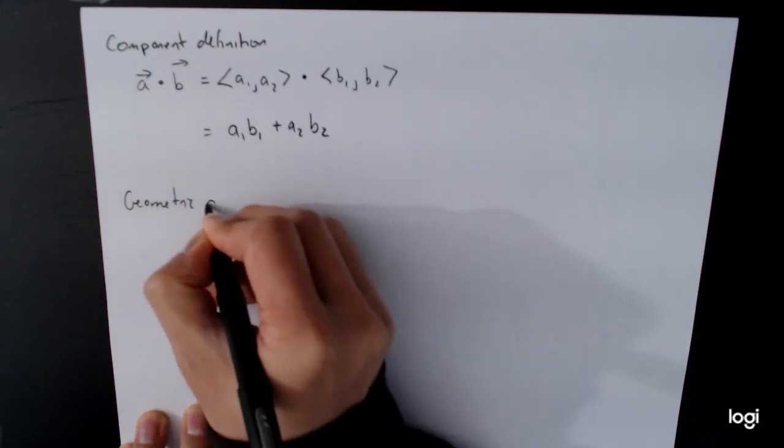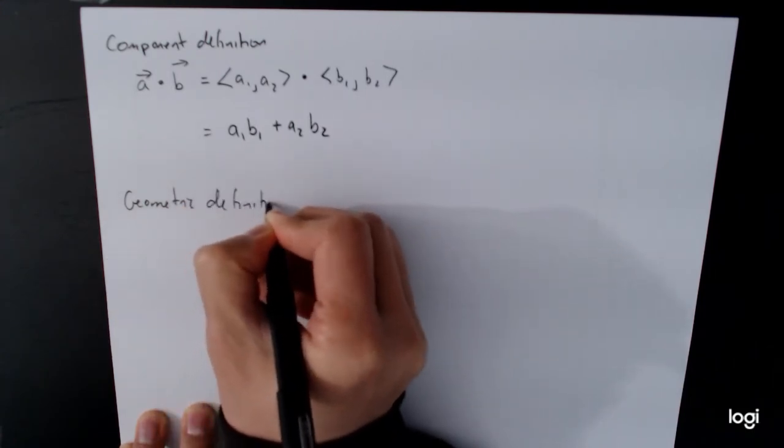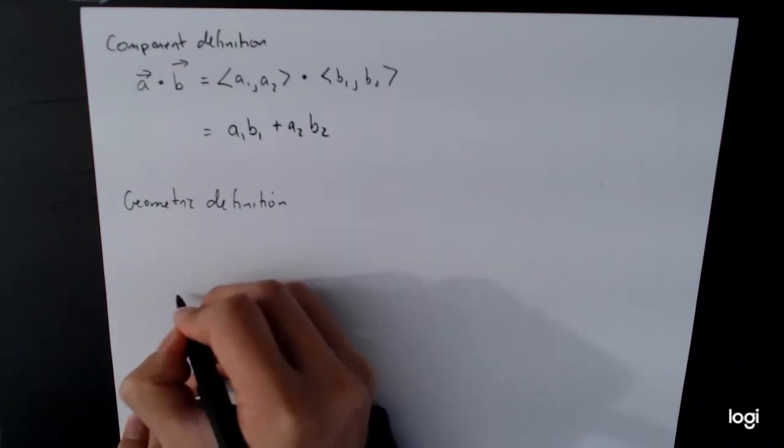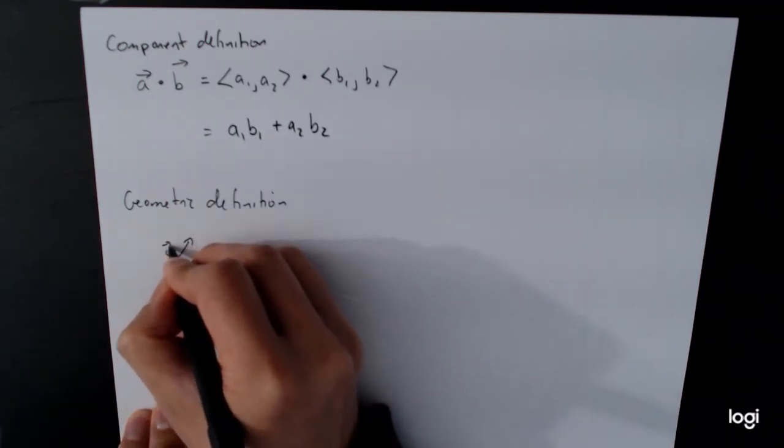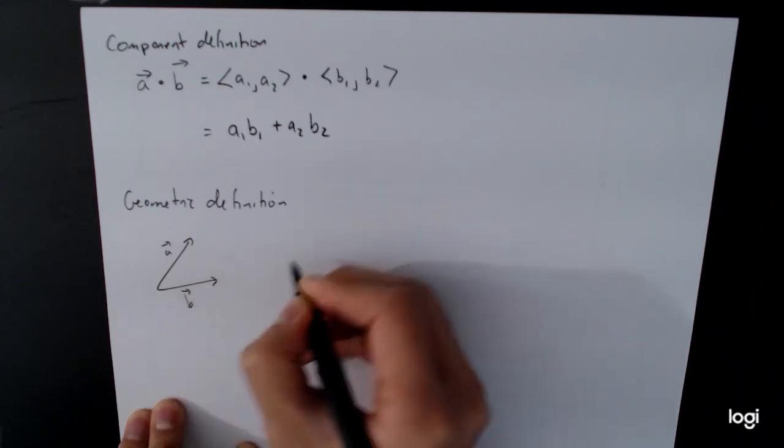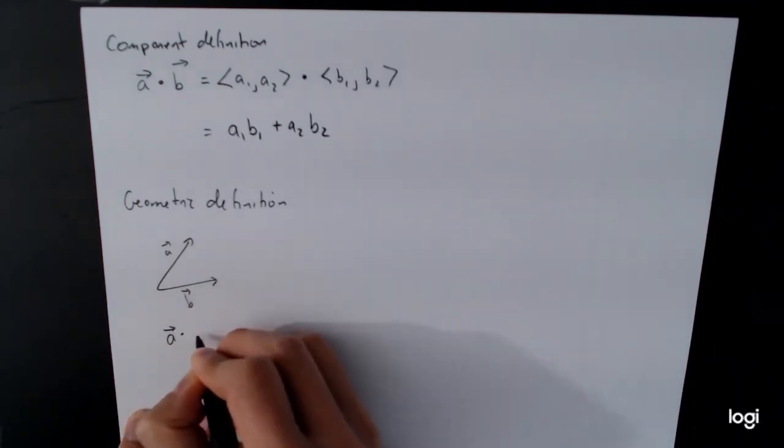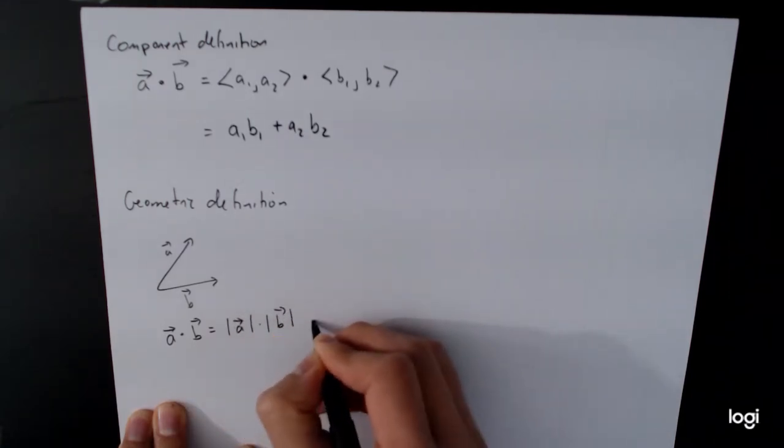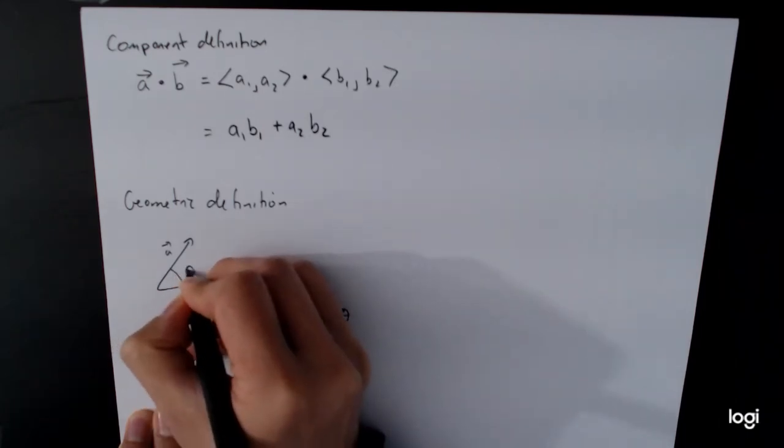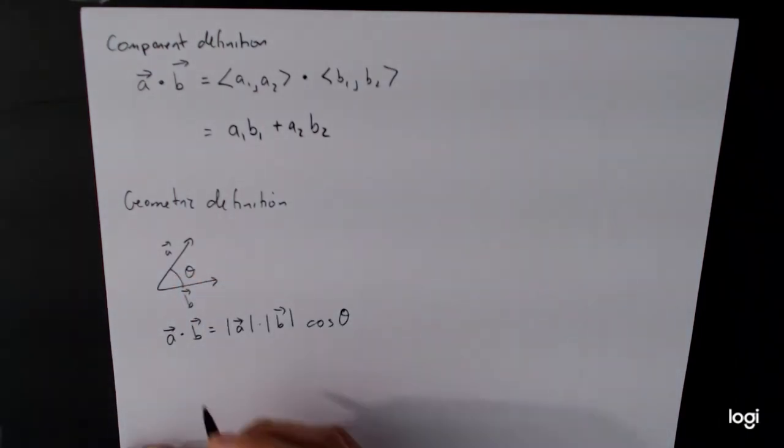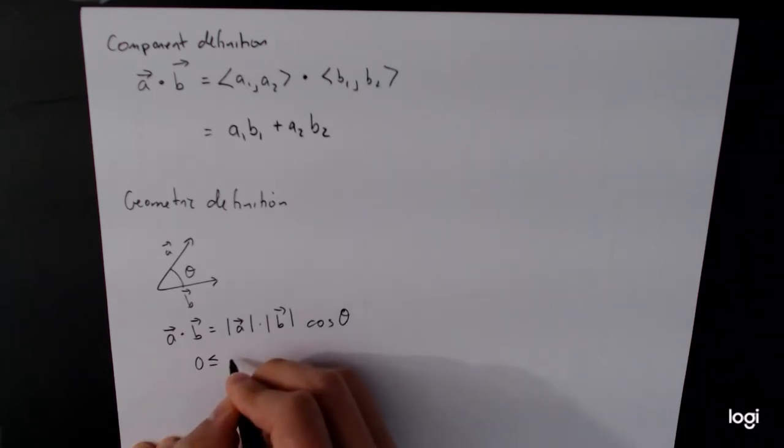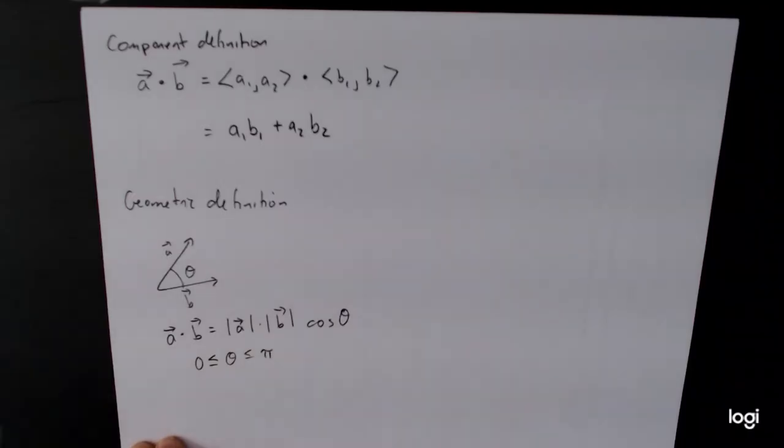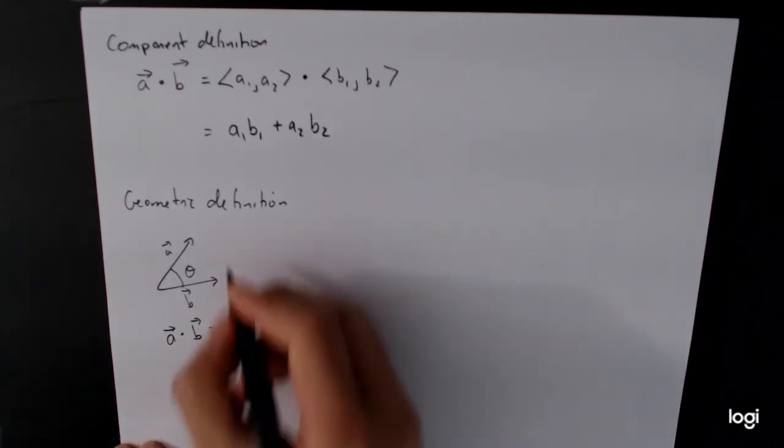Now we also have a geometric definition. And the geometric definition, if you have two vectors a and b, then a dot b is equal to the length of a times the length of b times cosine of theta, where theta is the angle between them. And theta will always be between zero and pi, or between zero degrees and 180 degrees. So theta is the angle between the vectors.